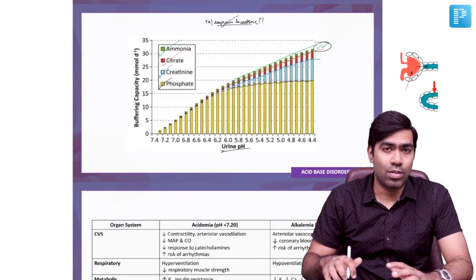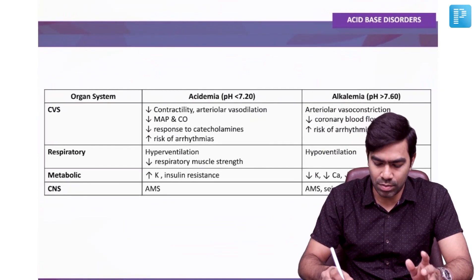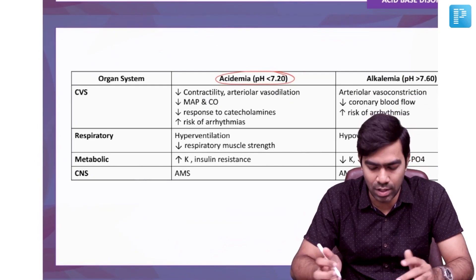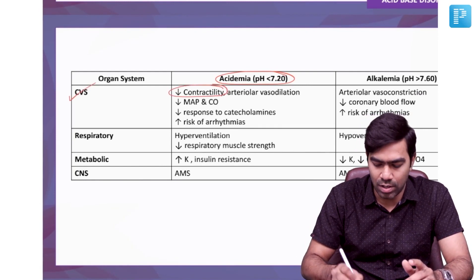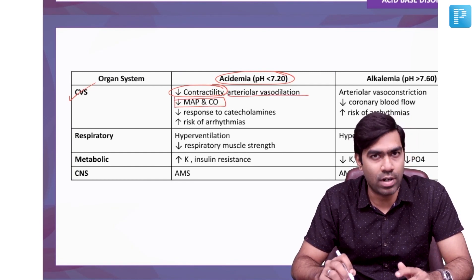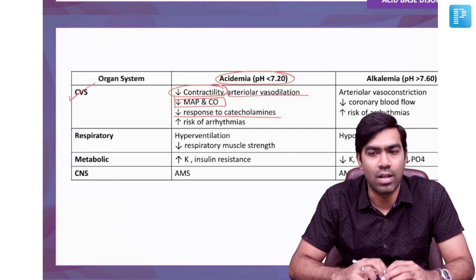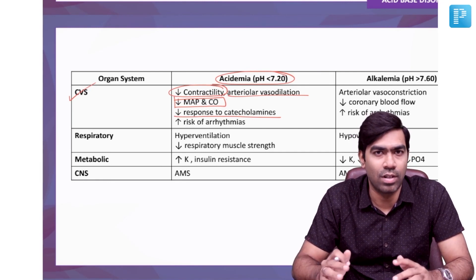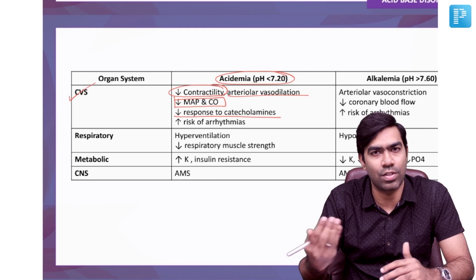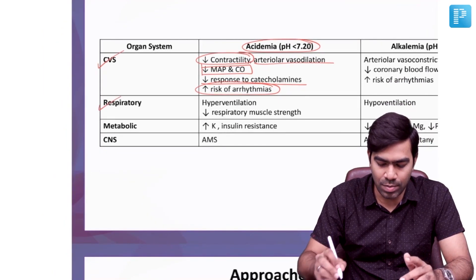Severe acidosis and alkalosis have significant effects on organ systems. In severe acidosis (pH <7.2), cardiovascular effects include myocardial suppression, poor contractility, arterial vasodilation, low mean arterial pressure, and reduced cardiac output. Acidosis also significantly impairs the response to vasopressors and catecholamines — correcting acidosis reduces vasopressor requirements in shock. There is also a significantly increased risk of cardiac arrhythmias.